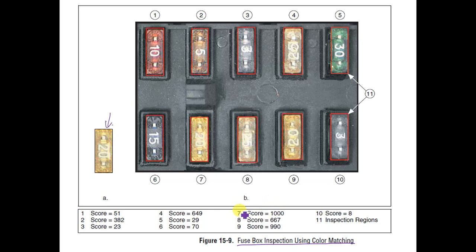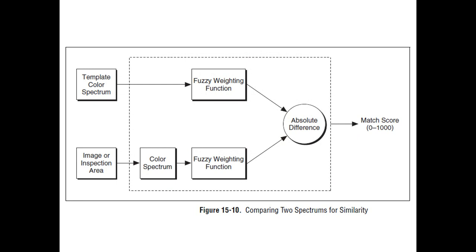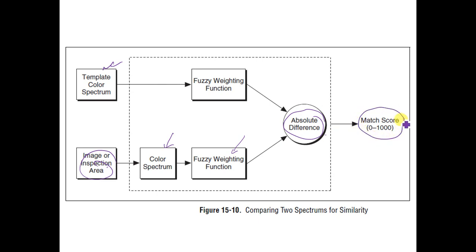For example, a score of 1000 for position seven means that fuse is present at position seven. The process works as follows: we have a template color spectrum that creates a fuzzy weighting system. Then we take the inspection area image, calculate its color spectrum, find the fuzzy weighting function, compute the absolute difference, and from that return a match score between 0 and 1000.